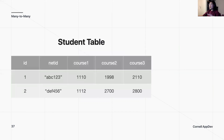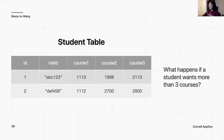Say we have a student table where each person can enroll in many different courses. If we represented this with multiple columns — course one, course two, course three — that would only allow you to take three classes. What happens if a student wants more? We could keep adding columns, but eventually it's a waste of space. If the student with the most courses is taking eight, then everyone else's seventh and eighth columns are completely empty. That's just not efficient.